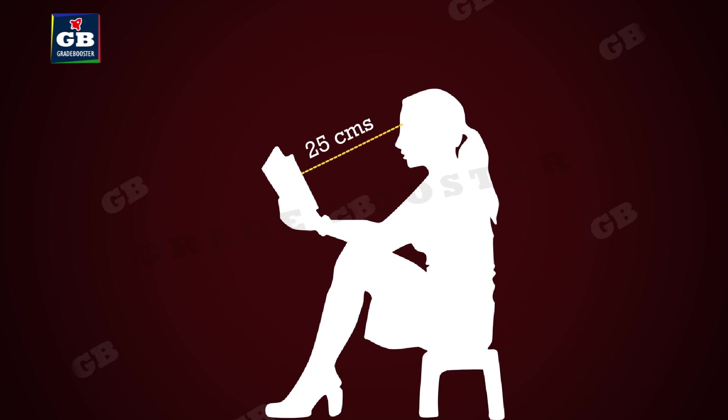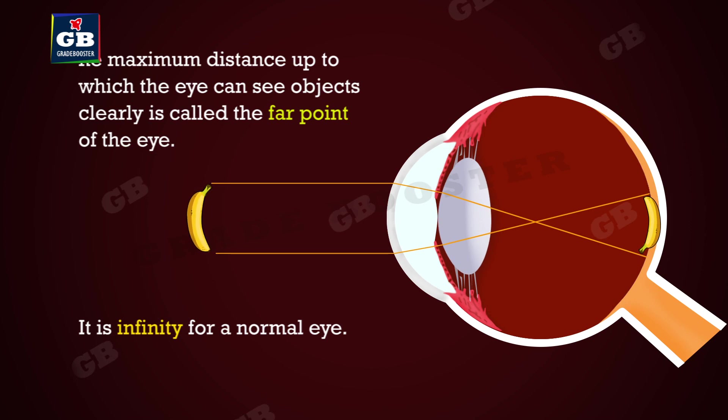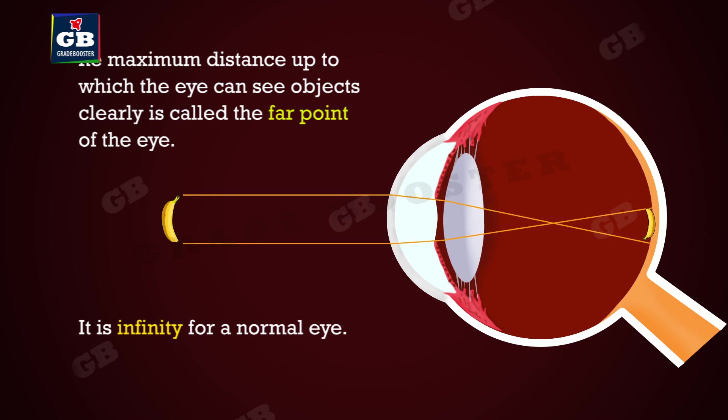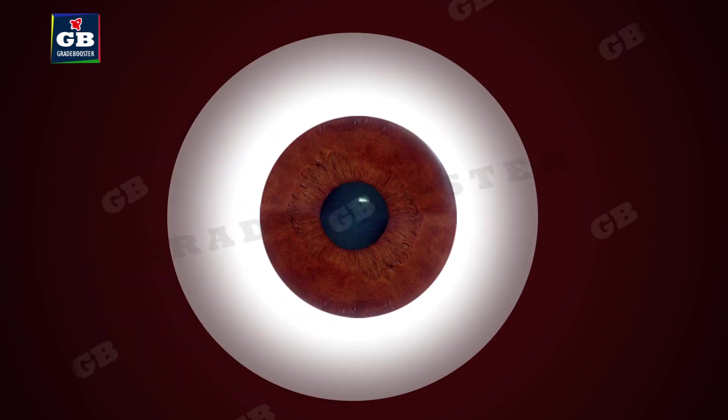The maximum distance up to which the eye can see objects clearly is called the far point of the eye. It is infinity for a normal eye.